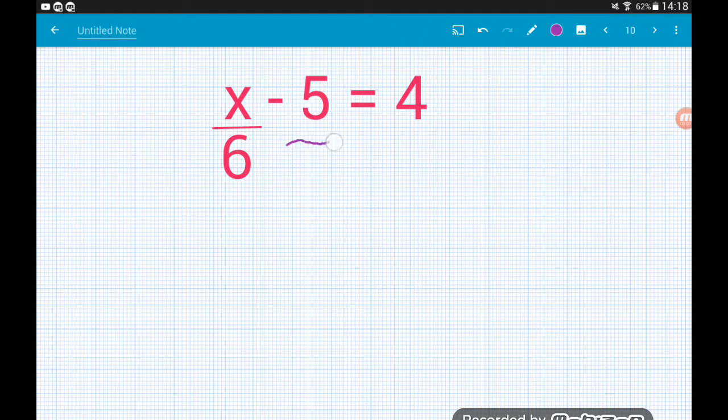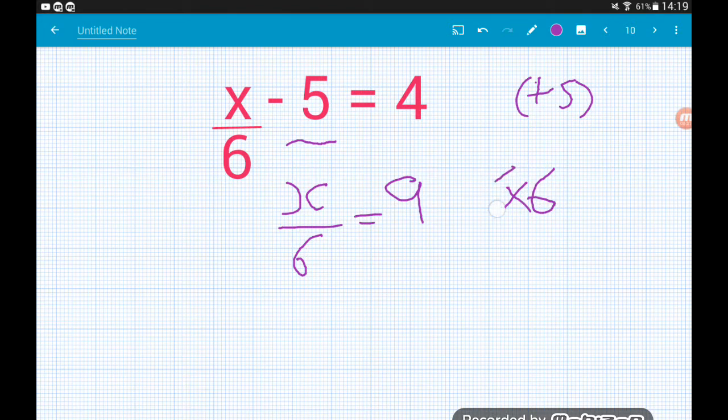We want to sort out this bit first. The opposite of minus 5 is to add 5. That leaves us with x over 6 is equal to 4 plus 5, which is 9. Now remember x over 6 is saying x divided by 6. So to cancel the division, we multiply by 6 and that leaves us with x equals 54. 6 times 9 is 54.